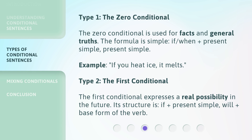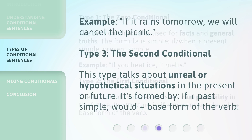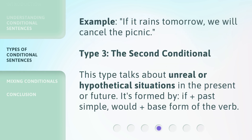Type 2: The First Conditional. The First Conditional expresses a real possibility in the future. Its structure is: if plus present simple, will plus base form of the verb. Example: If it rains tomorrow, we will cancel the picnic.